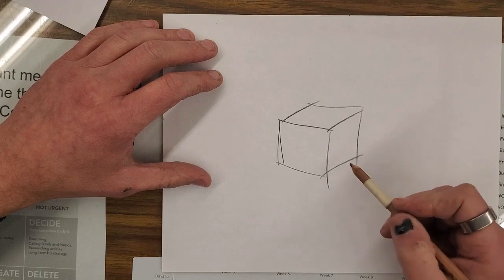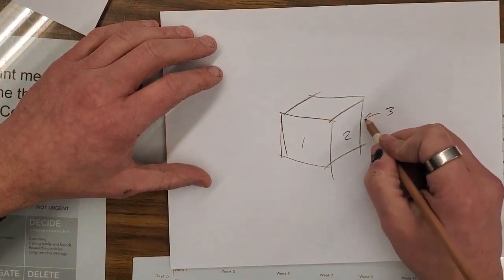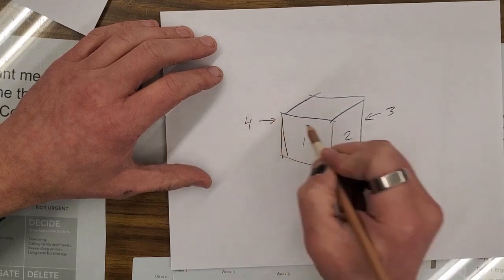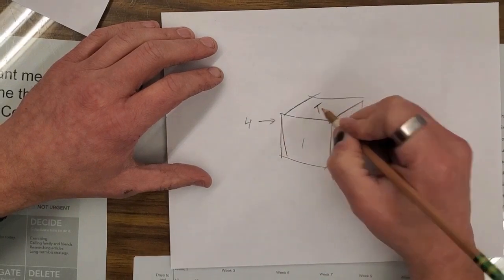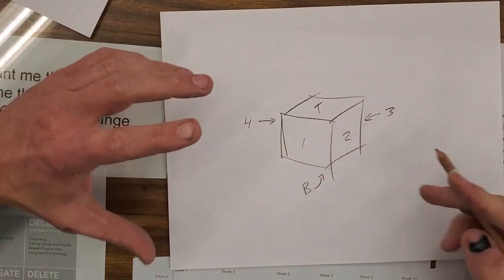A cube has six sides. When we draw it in 3D, we can see three of them. We've got side one, two, three would be back there, four would be over there. This is our top, bottom is right there. With sheet metal, we want to unfold, flatten, and keep it all in one piece.